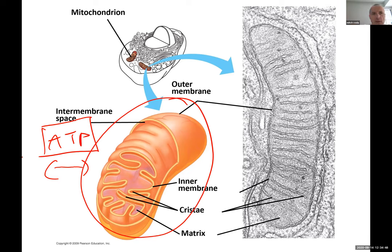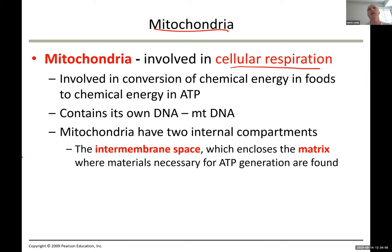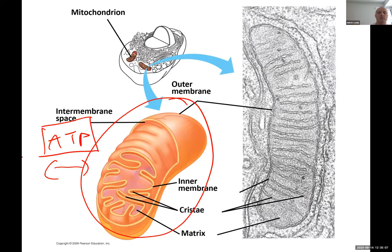A cell cannot work or do anything unless it has its fuel, which is ATP. All the functions inside the cell are run by ATP — like a car needs gas. Mitochondria produce the ATP required for the cell, like a gas pump.